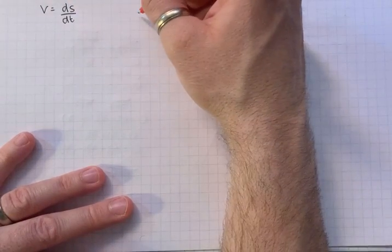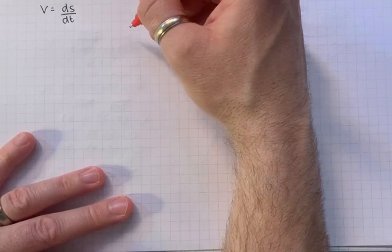So if you're given an equation for s, when you differentiate, you get an equation for v.